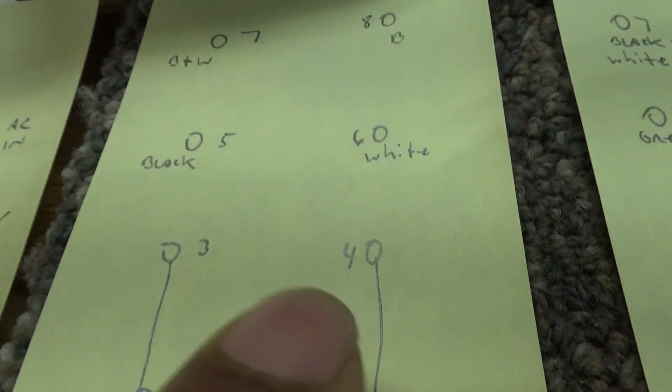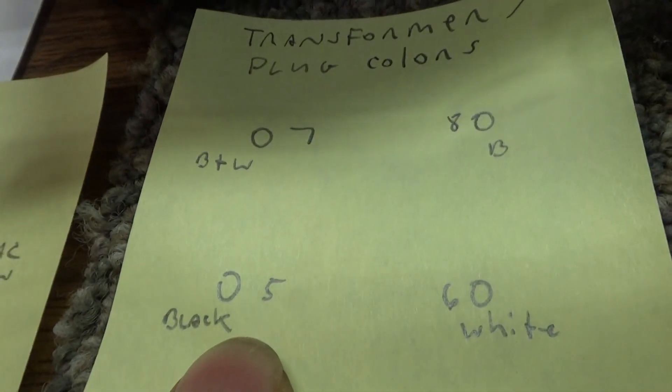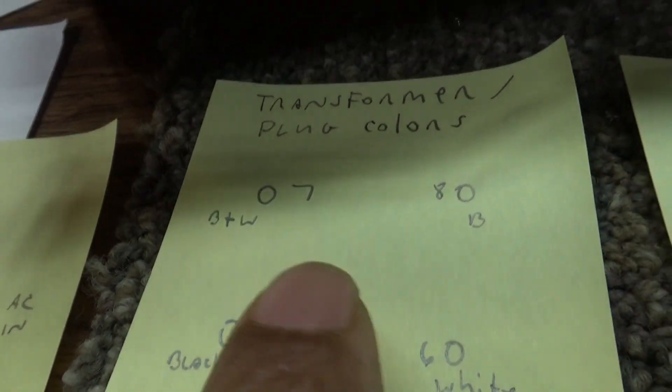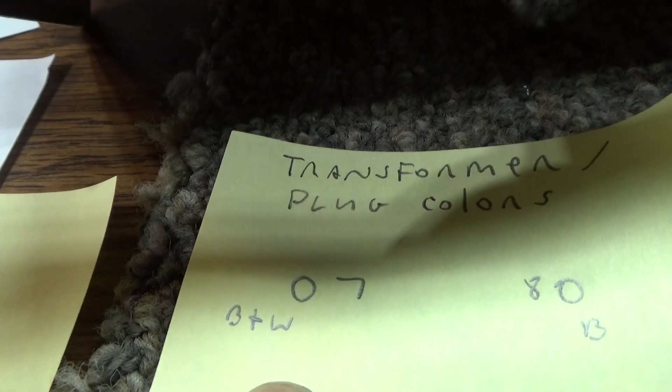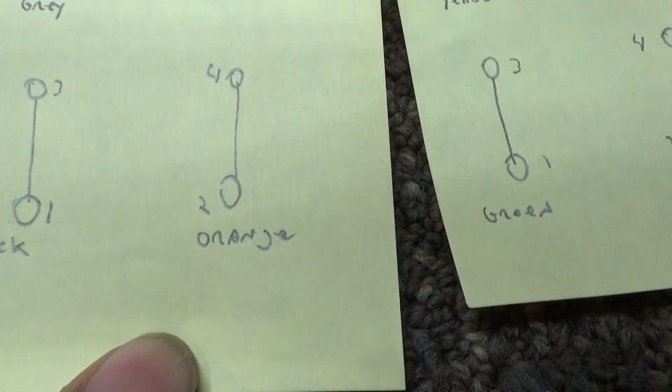And right quick I made a couple color codes. This is the transformer side. You know, one is brown, two is orange, three and four tied together so it's only one wire, five is black, six is white, seven is black and white, and eight is black on the transformer side.